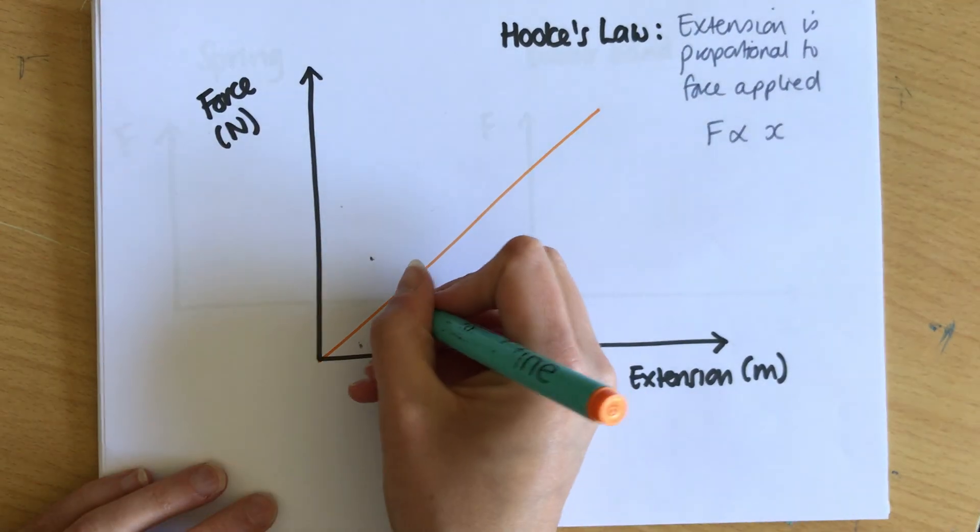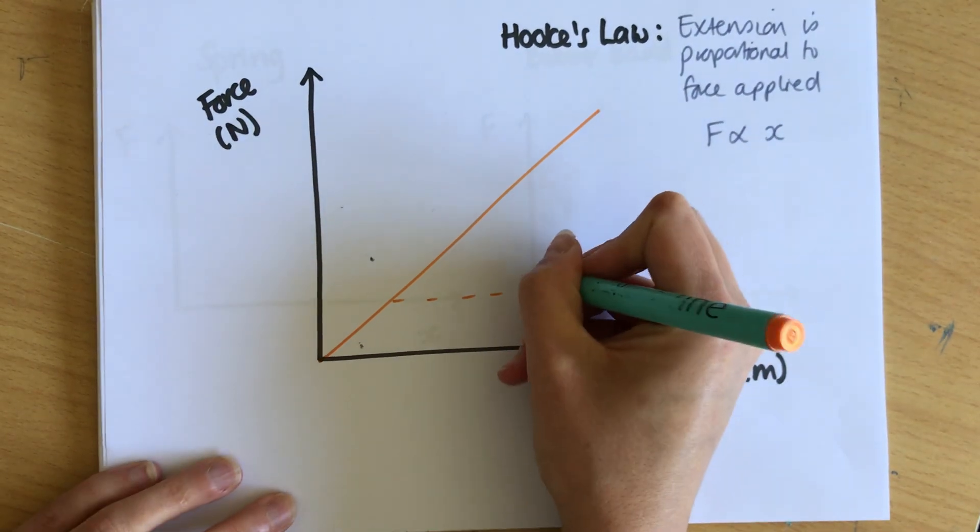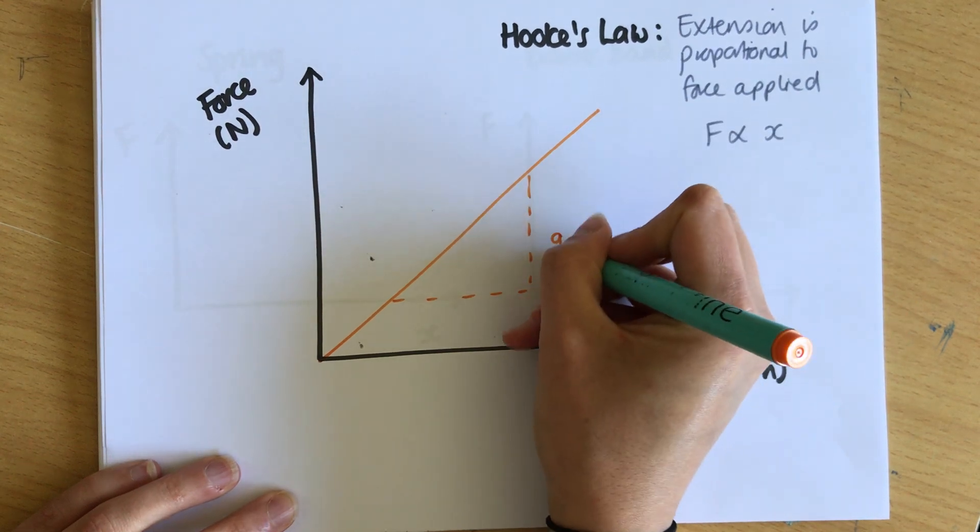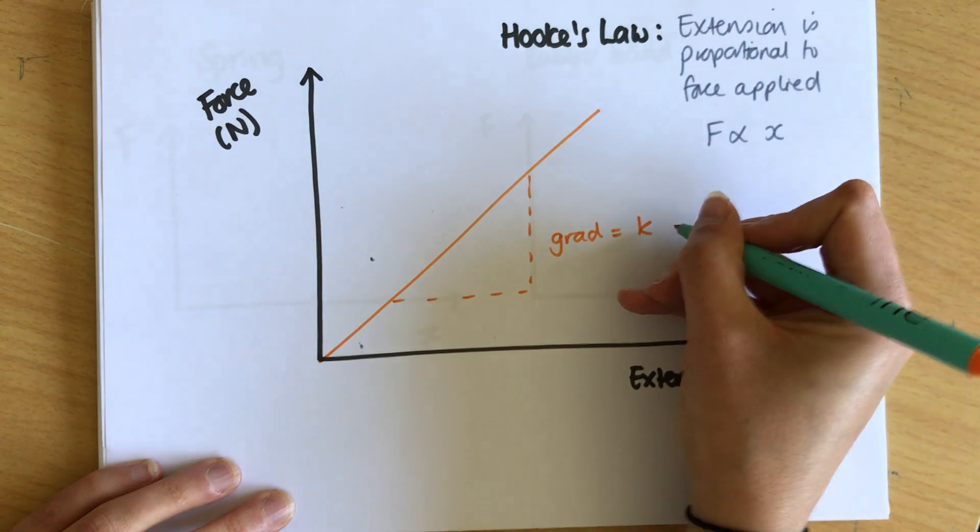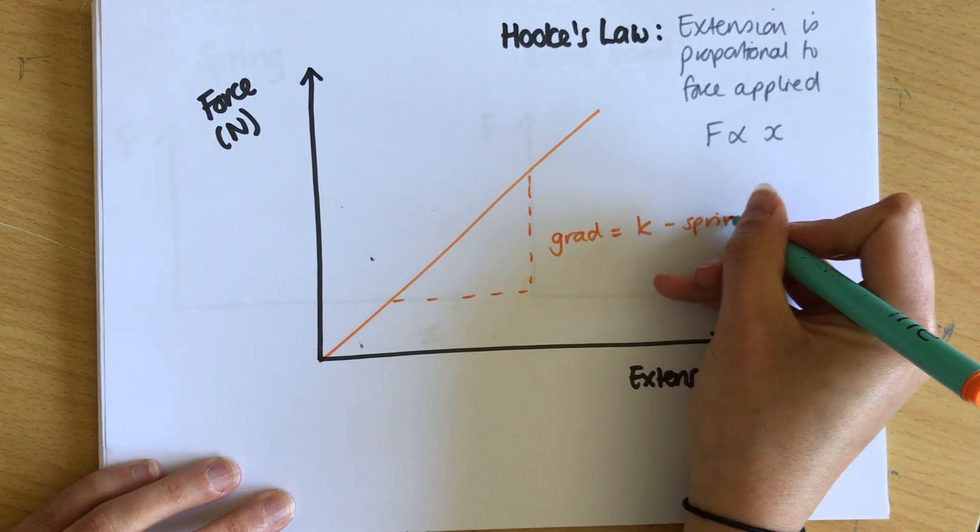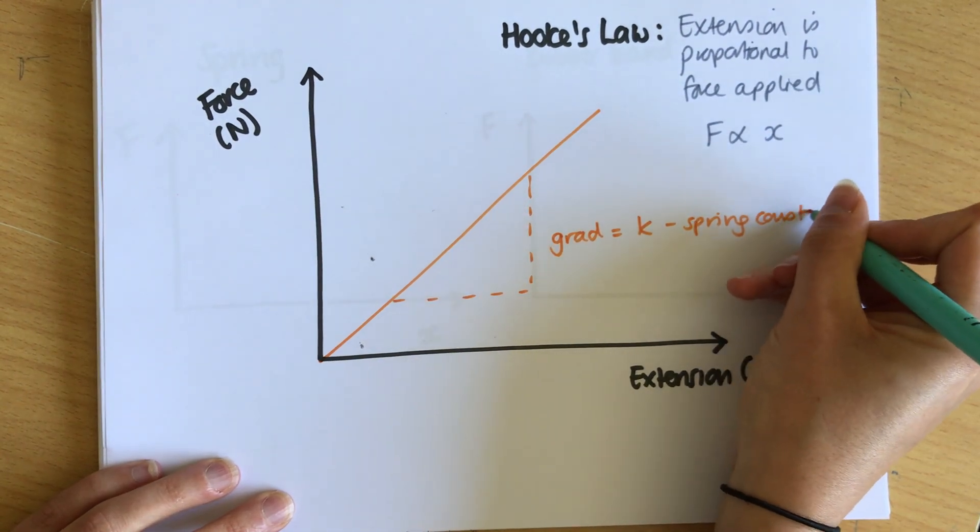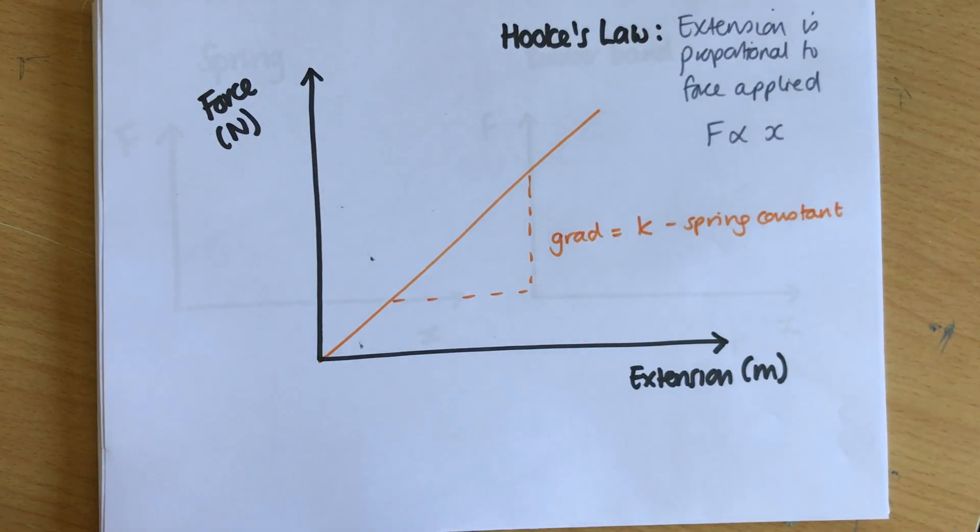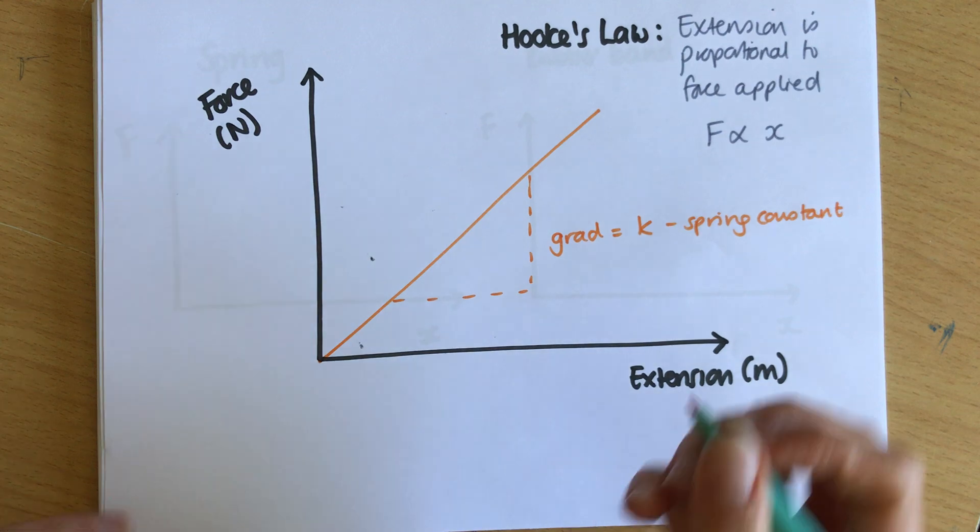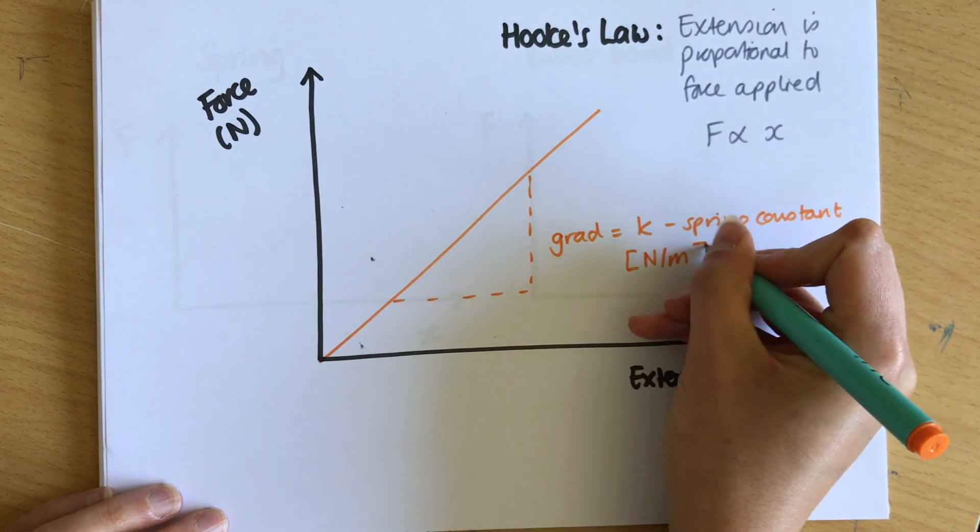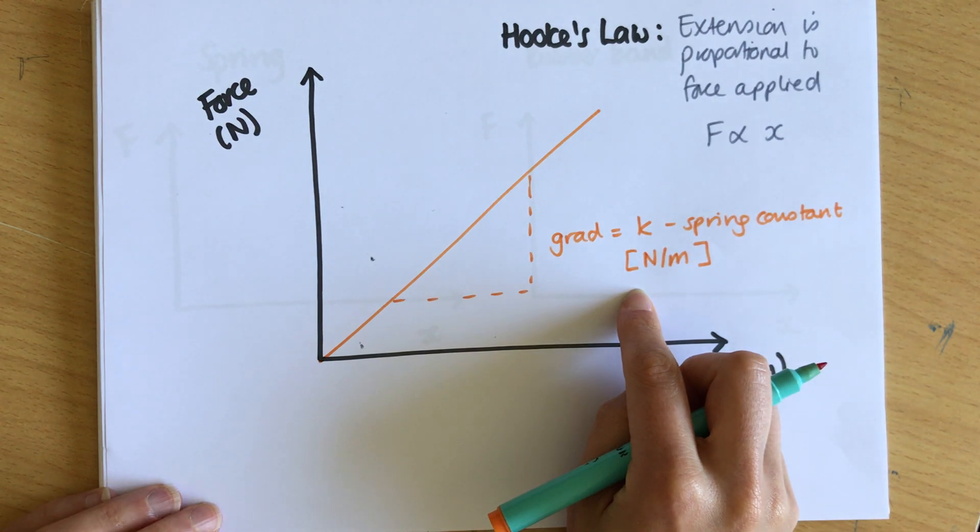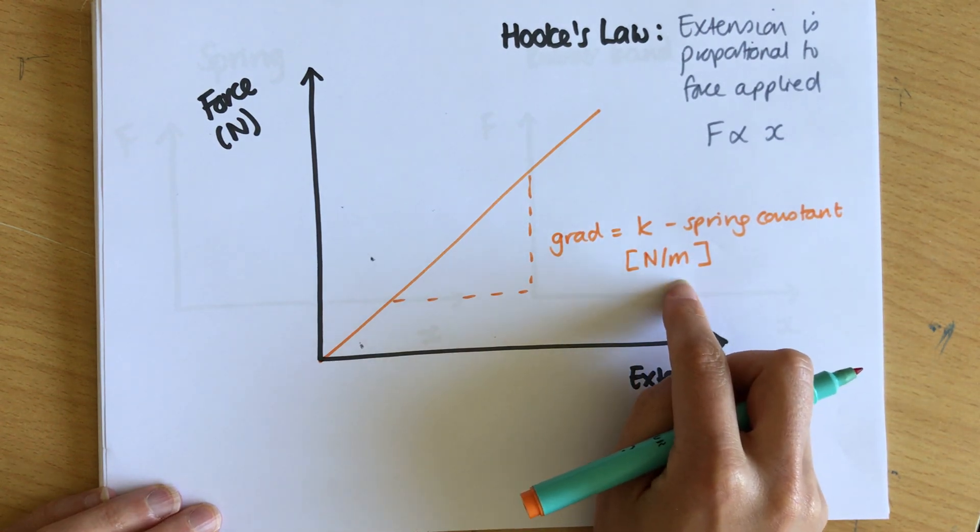Now what you can do is you can work out the gradient of this graph and the gradient is equal to something called k which is the spring constant. This tells us how stiff the spring is, how much force it requires to have it extended, and it's got the unit of newtons per meter—so it tells us how many newtons of force you need to extend the spring by a meter.